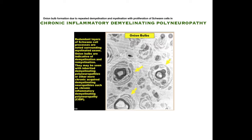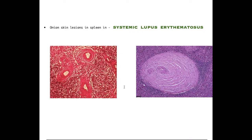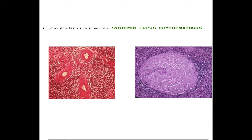The next disease is SLE (Systemic Lupus Erythematosus), also known as lupus. It is an autoimmune disorder in which antibodies are formed against nuclear or cytoplasmic antigens, causing multi-system involvement with a relapsing and remitting course. In SLE patients, onion skin lesions can be seen in the spleen under microscopy, which is a typical finding.